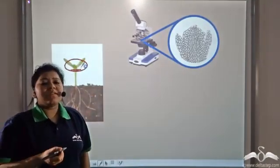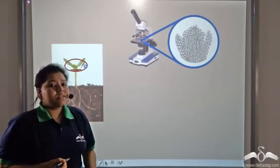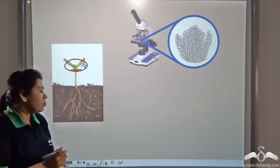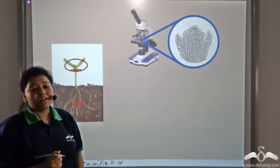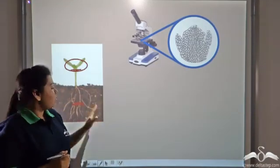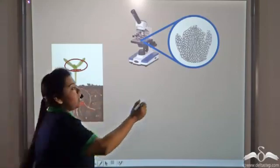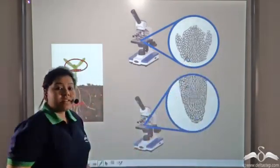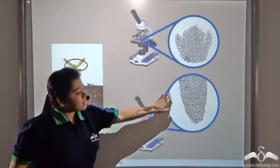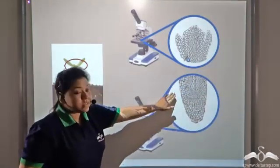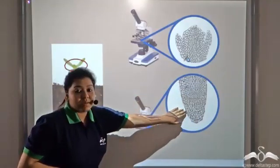Now let us perform a small experiment. Why don't we cut a little portion of the root tip and observe it under the microscope. So we cut a small portion of the root tip and observe it under the microscope — this is the root tip and you can see all the cells of the root tip.